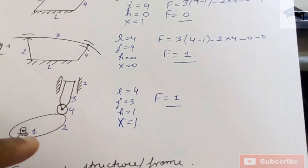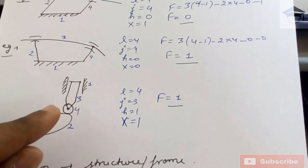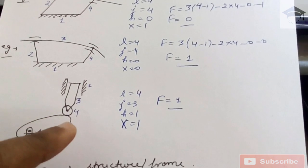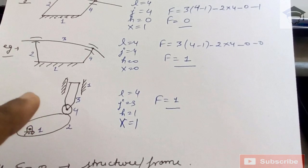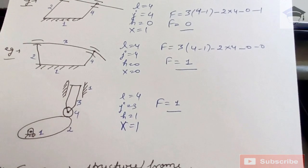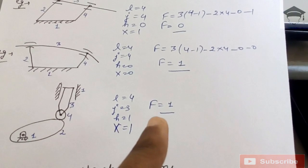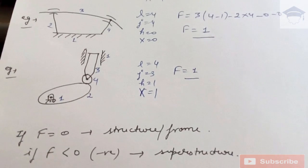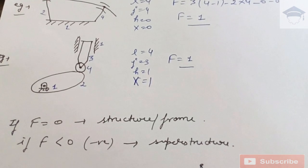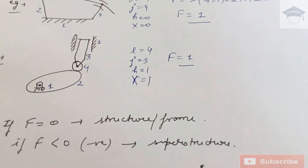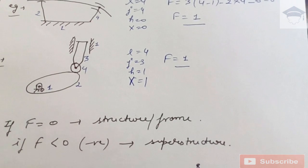If the degree of freedom f comes out to be zero, the mechanism is known as a structure or frame. If f is negative, it is known as a superstructure. For objective questions: f = 1 means kinematic chain, f = 0 means structure or frame, and f negative means superstructure. Questions may also ask you to first find the degree of freedom and then classify the mechanism.